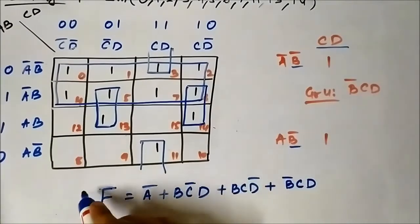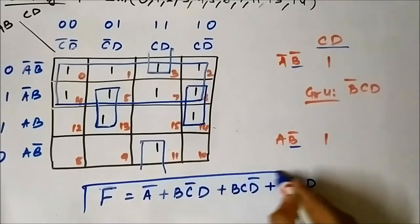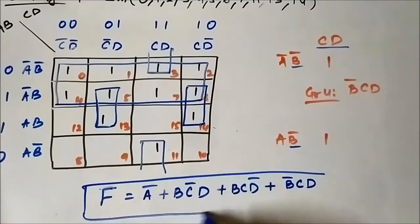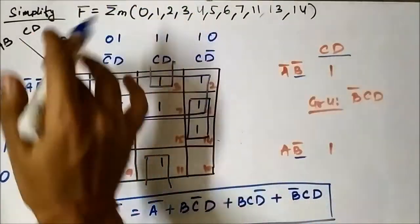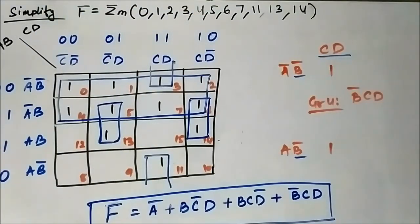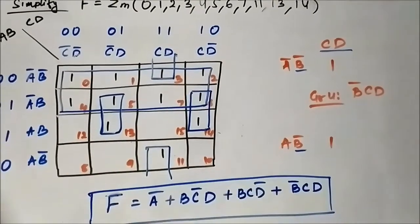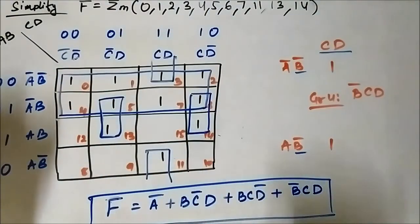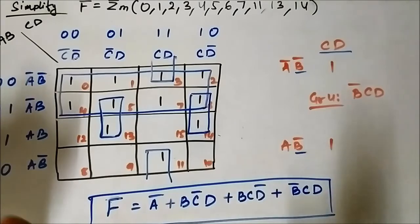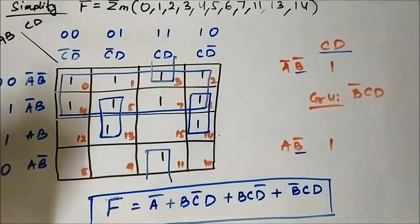So this is the simplified boolean expression for the given SOP expression in terms of minterm values. We have simplified it and obtained the result: a bar + b c bar d + b c d bar + b bar c d. All you have to do is map the respective cells carefully, form the groups following the rules of group formation, and then identify the common variables.